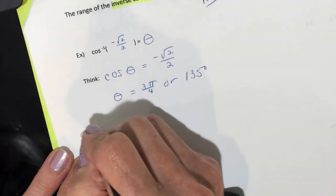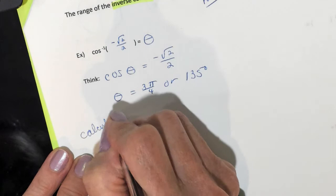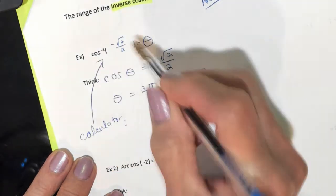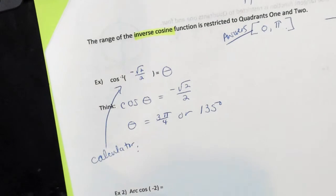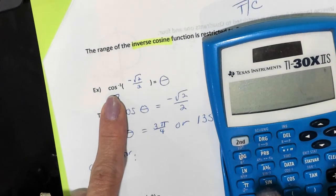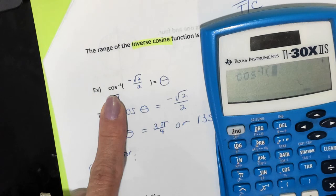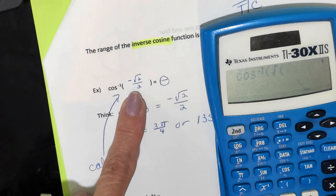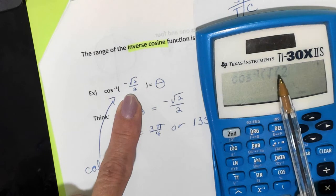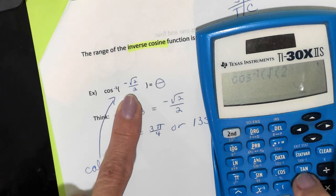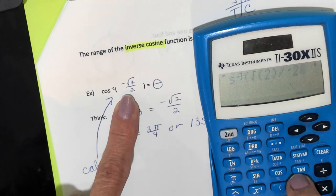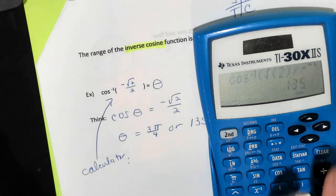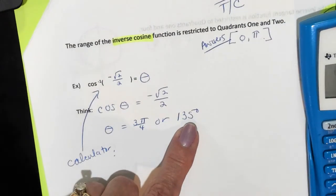For calculator users: I like to move the negative down. Clearing my calculator — inverse cosine, square root of 2, close the parenthesis, divided by negative 2, close parenthesis. And I get 135 degrees.